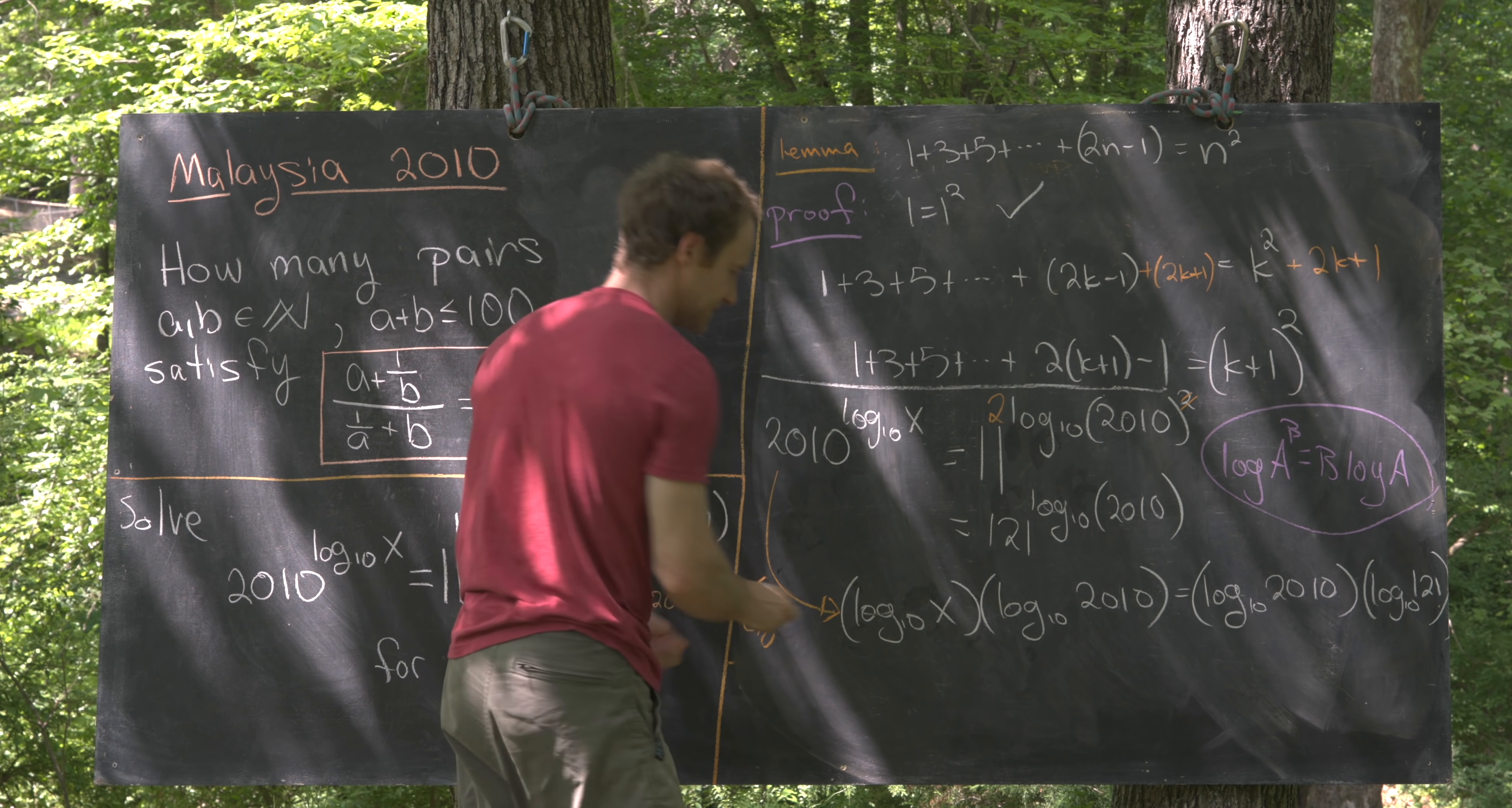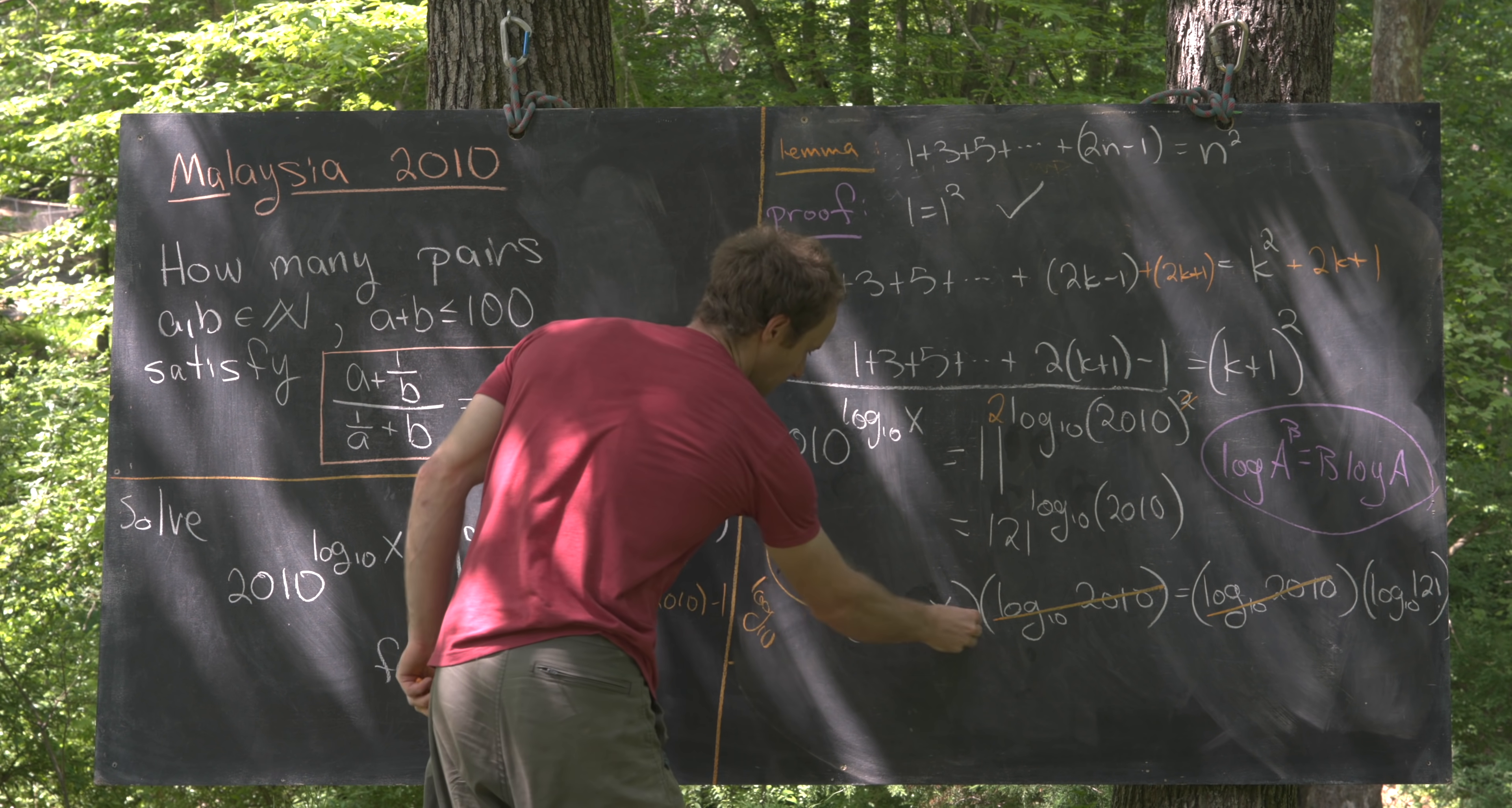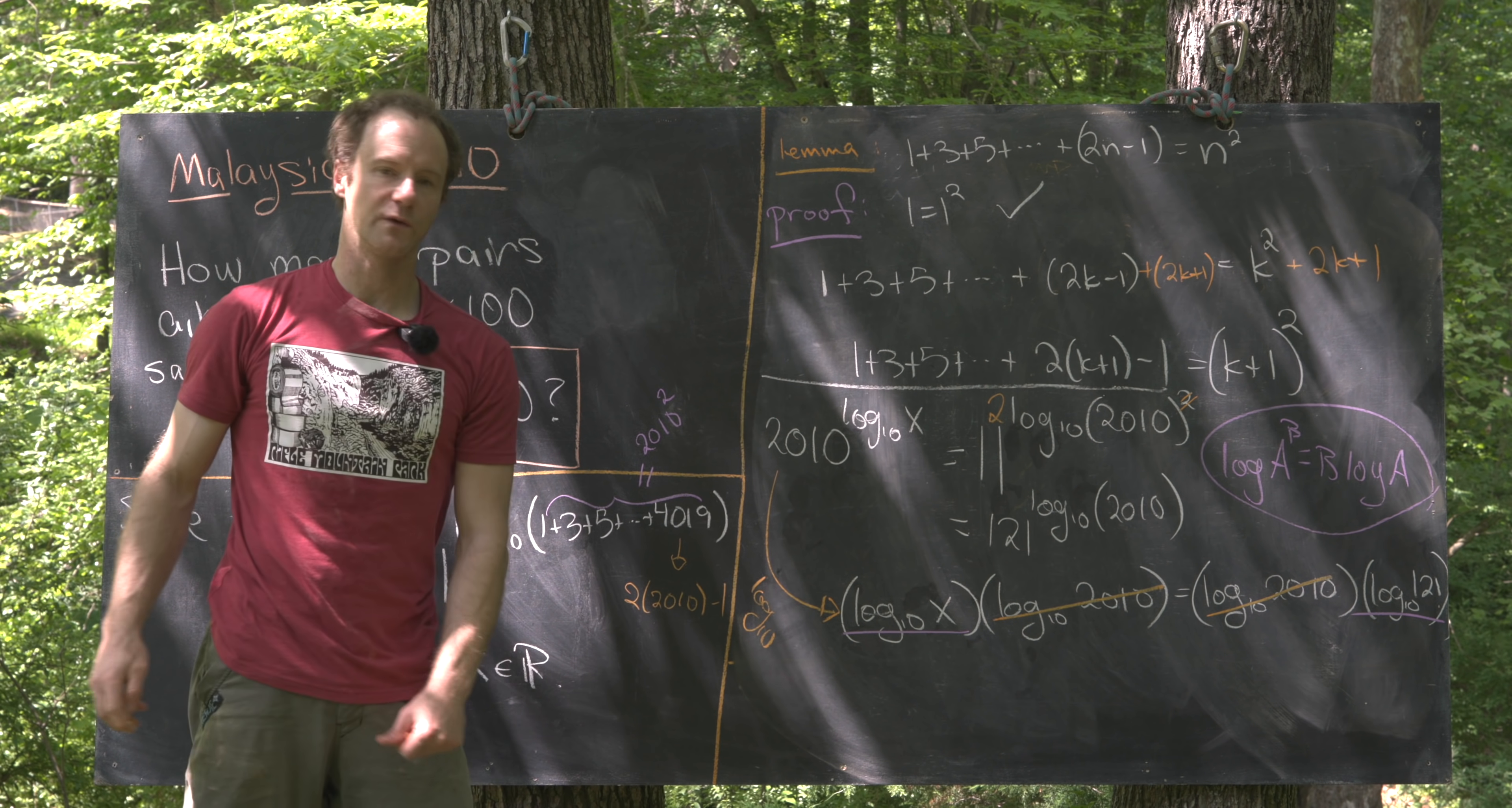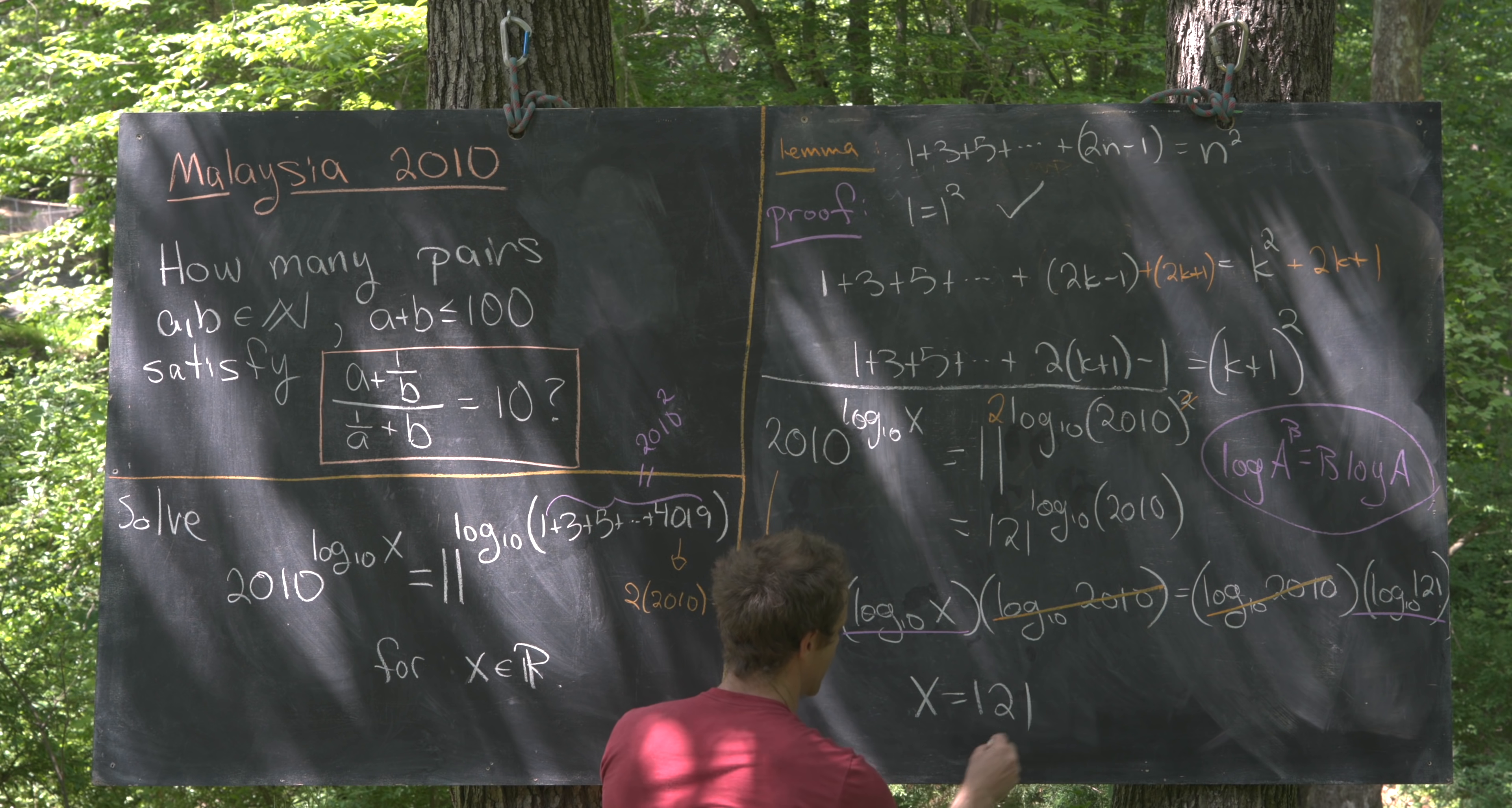Now canceling some stuff from both sides of the equation, we will see that log base 10 of x is the same thing as log base 10 of 121. But that means that x is equal to 121. So that means we've solved both of these equations.